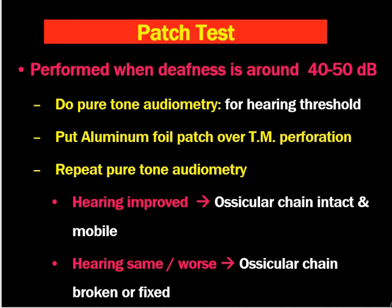Patch test is not commonly performed, but it is performed when deafness is around 40 to 50 decibels to find out ossicular discontinuity. First, we perform pure tone audiometry for hearing threshold. Then an aluminum foil patch is placed over the remaining tympanic membrane perforation and pure tone audiometry is repeated. If hearing has improved, then we think that the ossicular chain is intact and mobile. If hearing is the same or worsened, then there is an ossicular chain problem — either a broken or fixed ossicular chain. Therefore it is helpful when the patient has a PTA level of around 40 to 50 decibels.